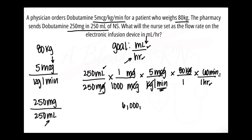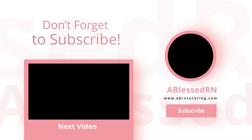Multiply the numerator: 250 times 5 times 80 times 60 equals 6,000,000. For the denominator, multiply 250 times 1000 — the ones are just placeholders and don't affect the result — giving 250,000. Divide the numerator by the denominator and the answer is 24 milliliters per hour. Don't forget to round if necessary and label your answer. For more breakdown on how to do dimensional analysis, like and subscribe.